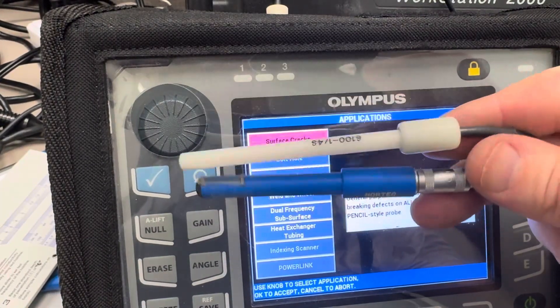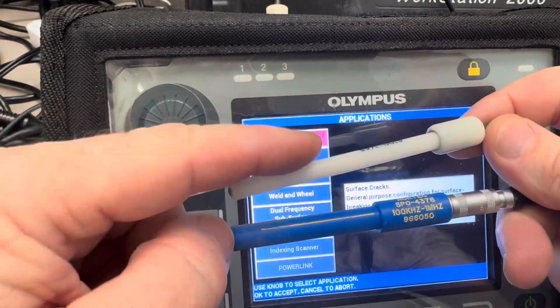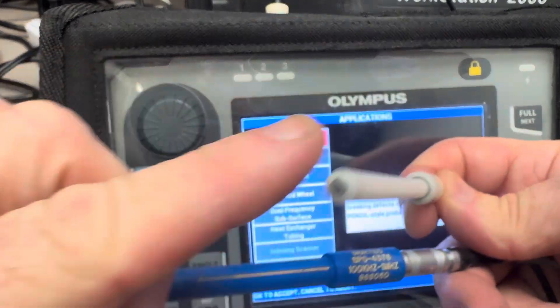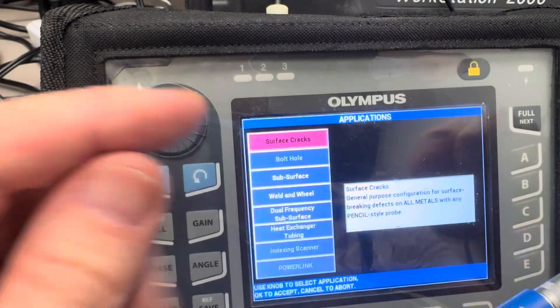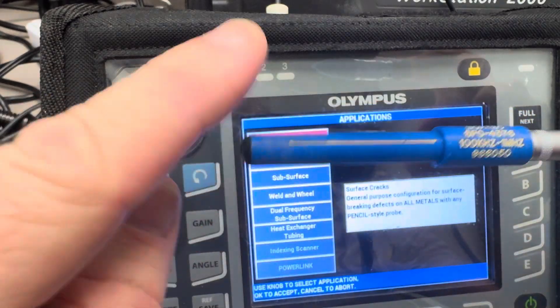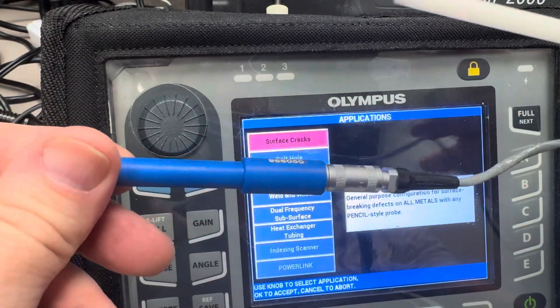I got a couple of probes that might work for you here. This one's just a pancake coil and this is a differential plus point coil. So I'll show you the difference between these two.